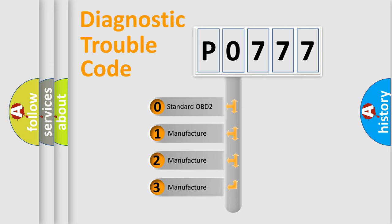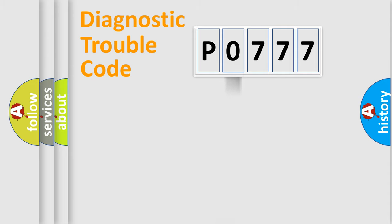If the second character is expressed as zero, it is a standardized error. In the case of numbers one, two, three, it is a more specific expression of the car-specific error.